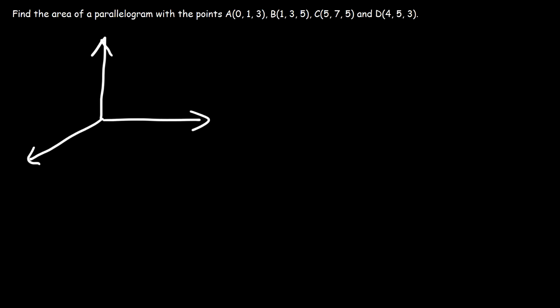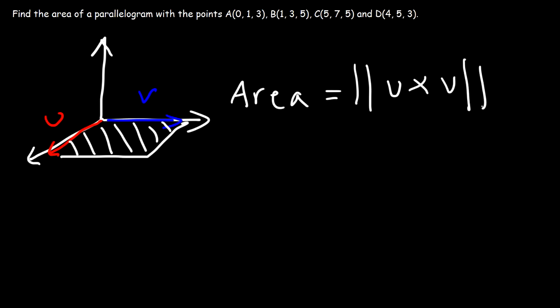So let's say we have two vectors, vector u and vector v. These two vectors can be used to form a parallelogram. And our goal is to find the area of the parallelogram formed by the two vectors. And here's the formula that we need to use. The area is going to be the magnitude of the cross product of those two vectors. So let's use that formula in this example.